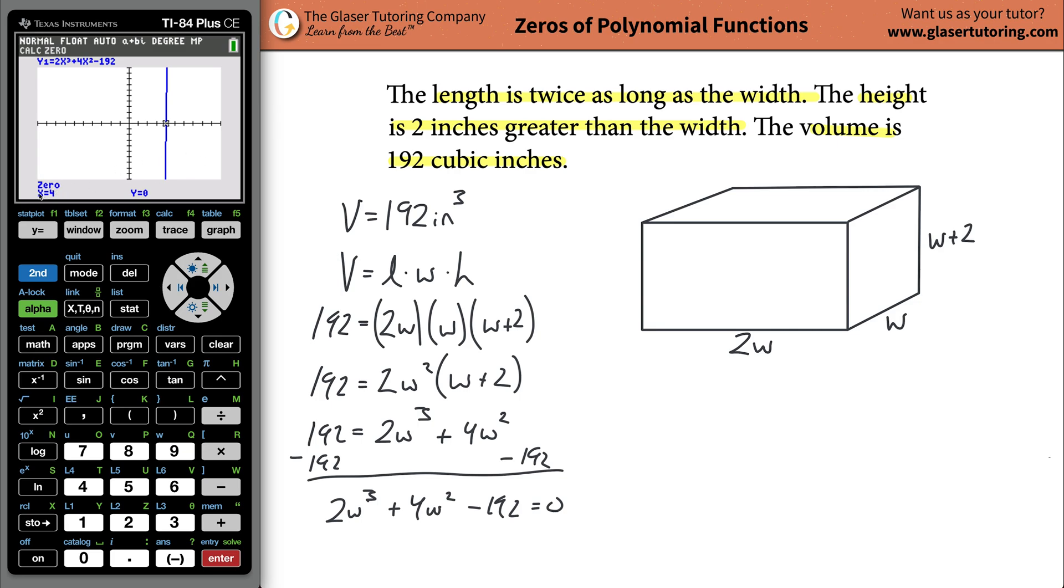It calculates for you. X is going to be four, and the y value is zero. We used the calculator and we said that w equals 4. You can check that. Take four, plug it in for each of the w's and see if this thing is zero. And it will be. That's the way to use the calculator.